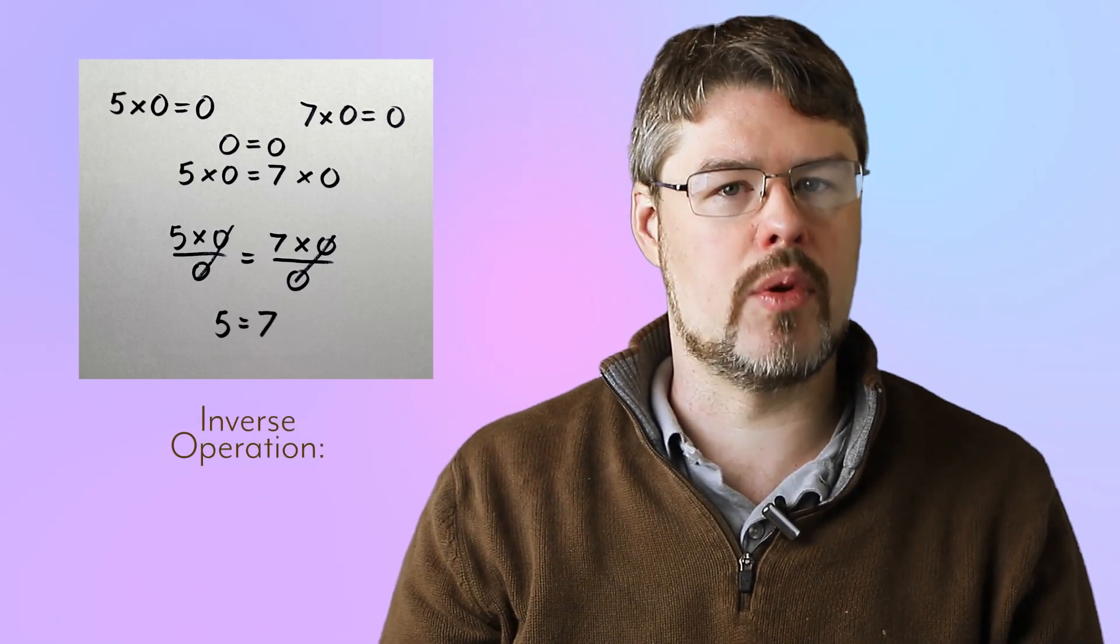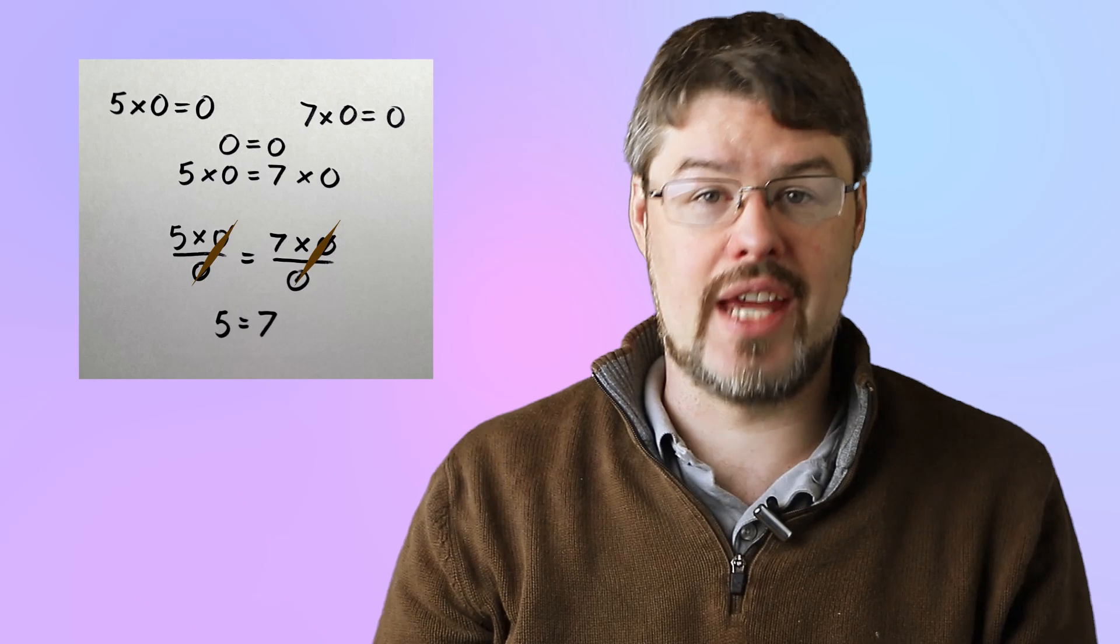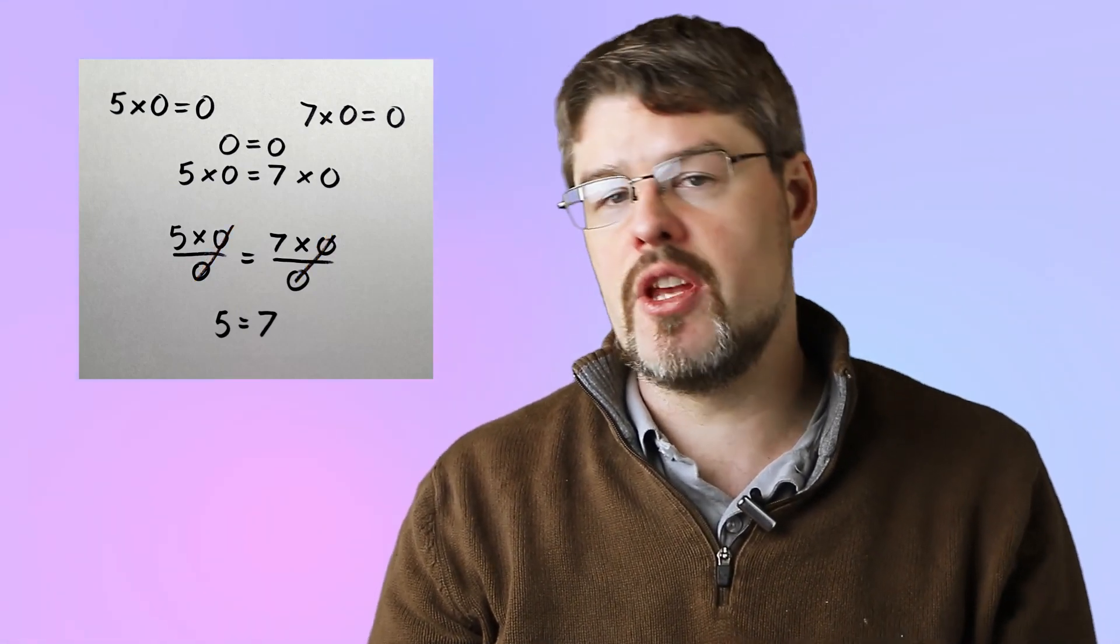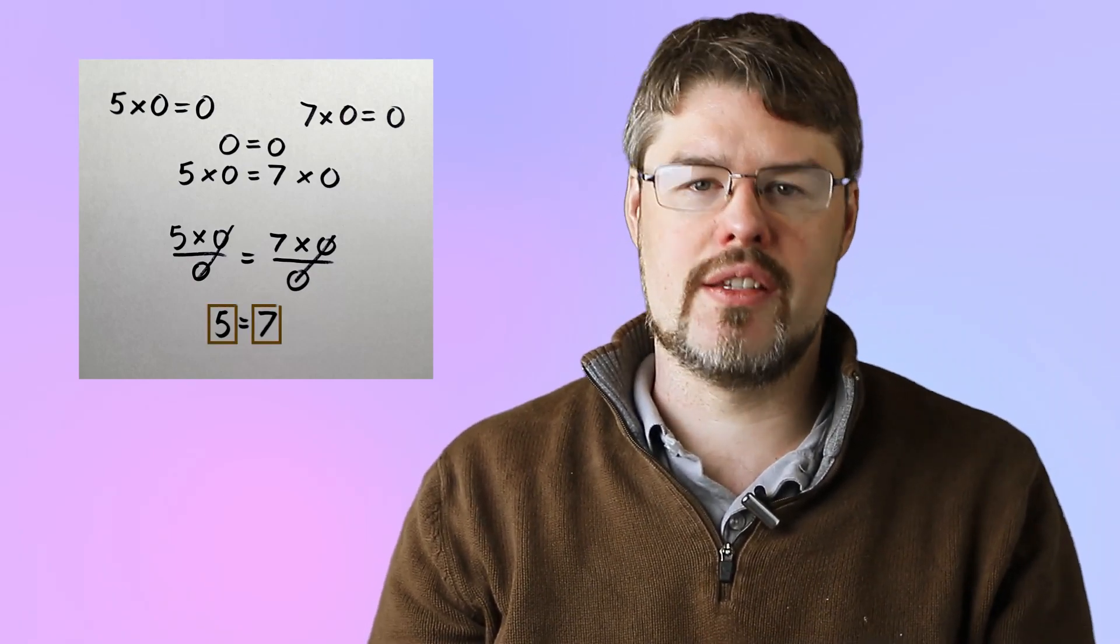Now, we're going to use an inverse operation to divide both sides by zero. Then, it's simply a matter of canceling what's on top and bottom, because if you multiply by some real number and then immediately divide by it, you get back to where you started. On the left side, that's five, and on the right side, that's seven.